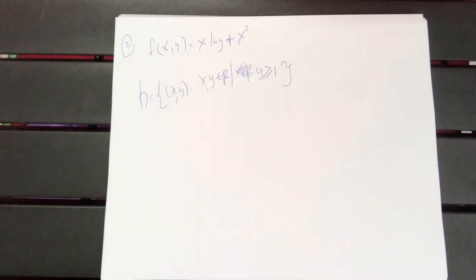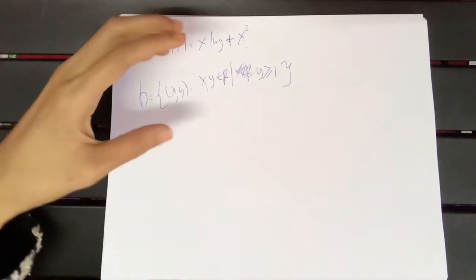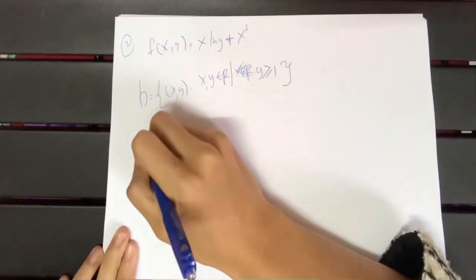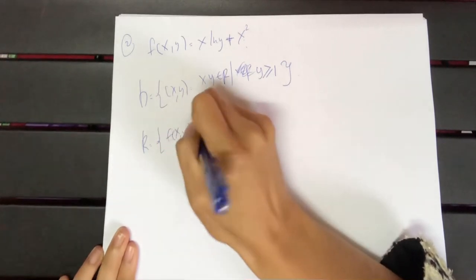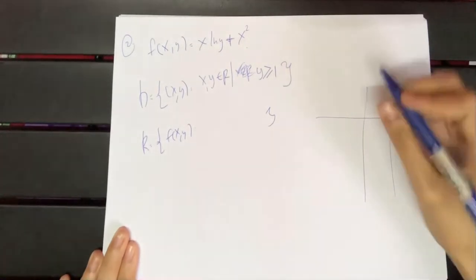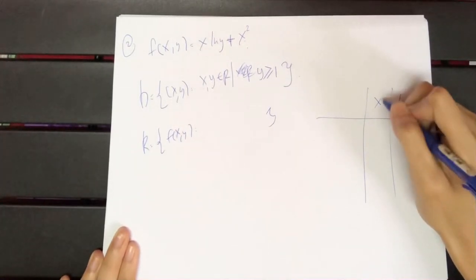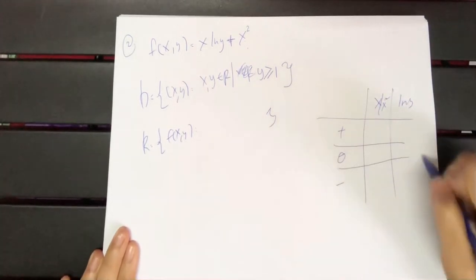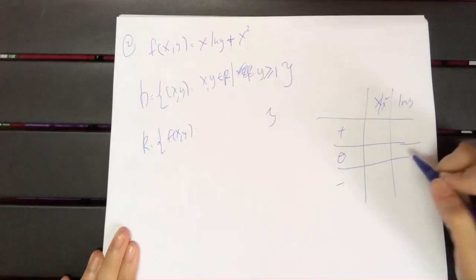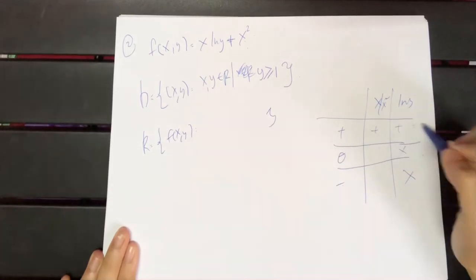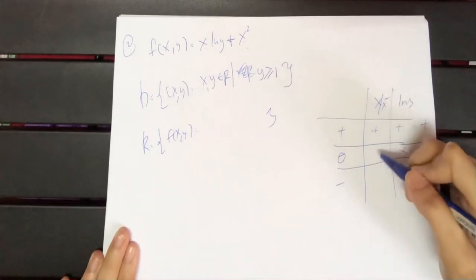Now for range. We have x² and ln(y). For ln(y), zero and negative are not allowed, so only positive y values. If x is positive and y is positive, you get a positive answer. If x is zero, you get zero. So the range can include zero and positive values.